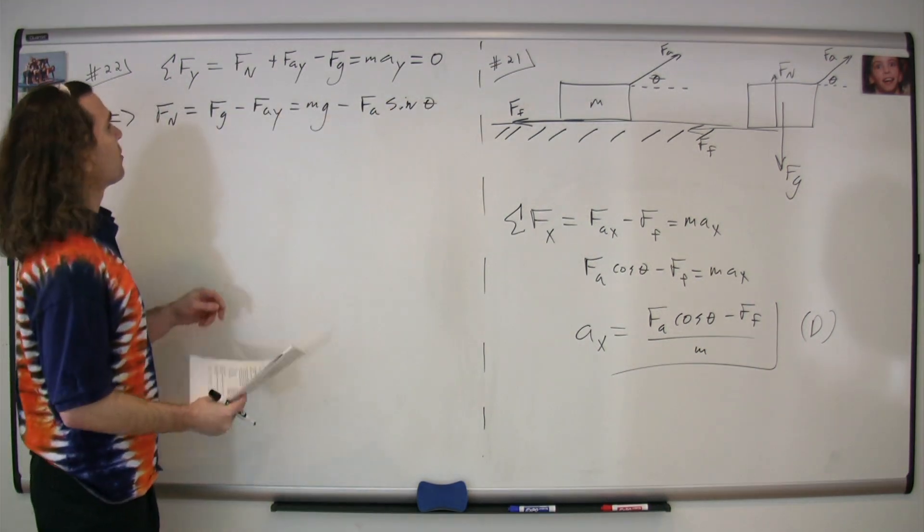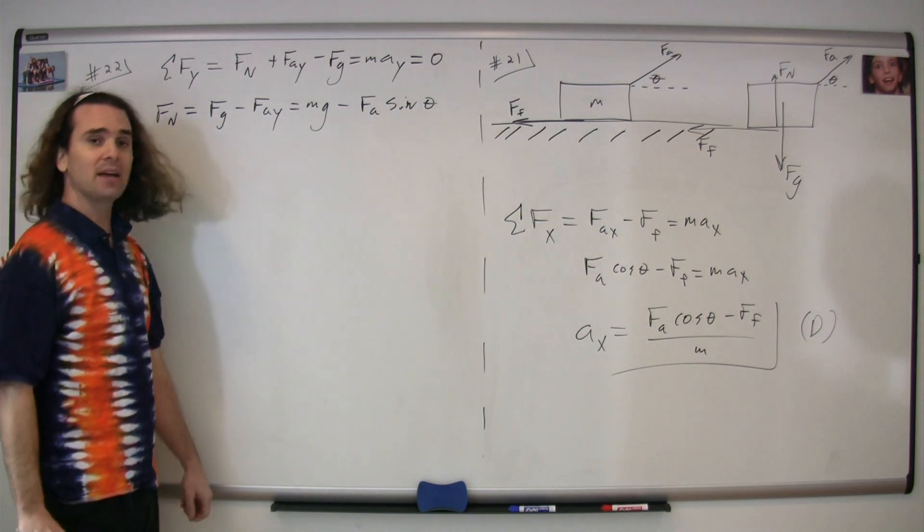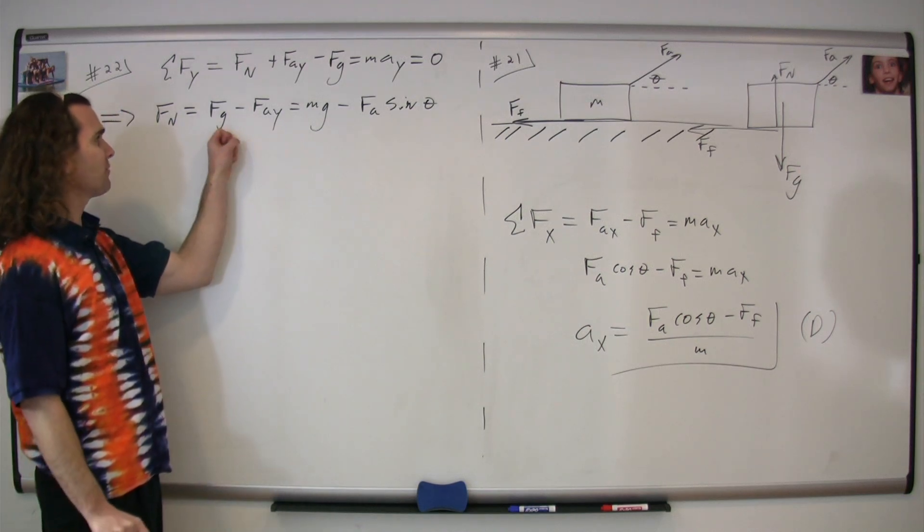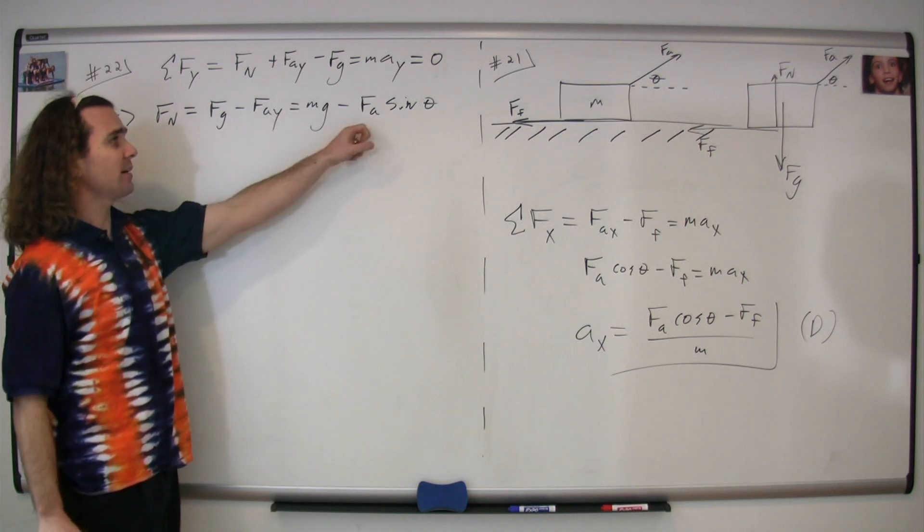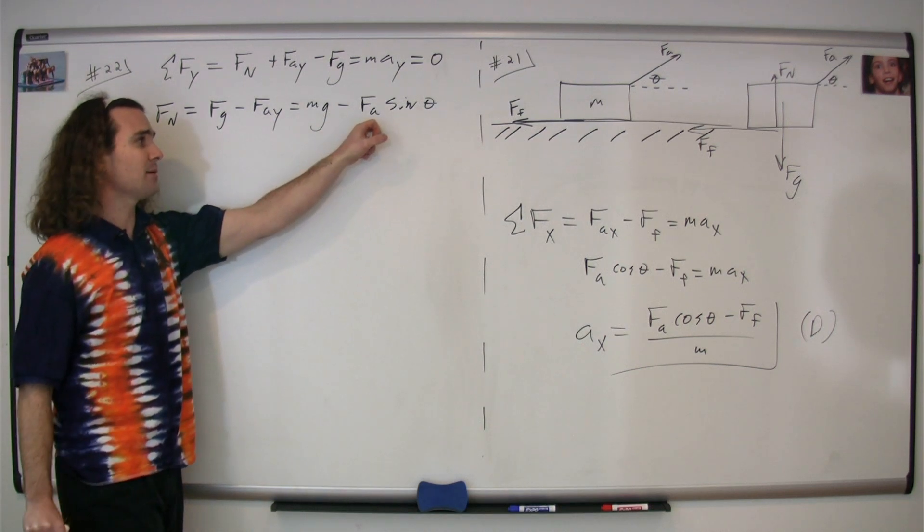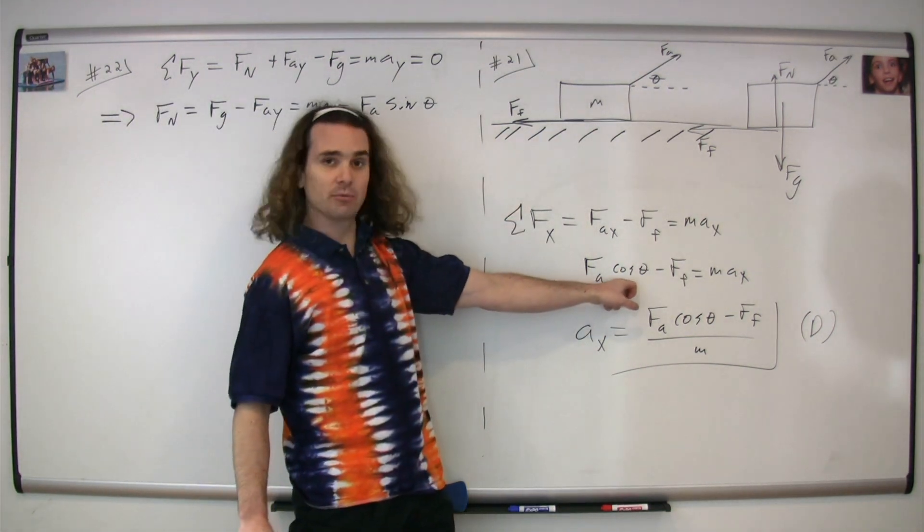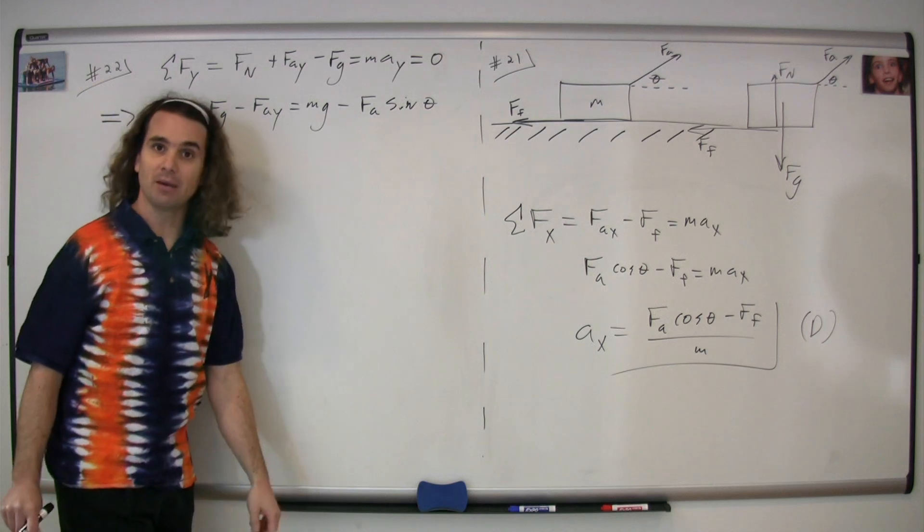Solving for the force normal, we get that the force normal is equal to the force of gravity minus the force applied in the y-direction. We can substitute the equation for the force of gravity, mass times the acceleration due to gravity, minus the force applied in the y-direction. The component's just going to be force applied times the sine of theta, since the x-direction is cosine and the y-direction is sine.